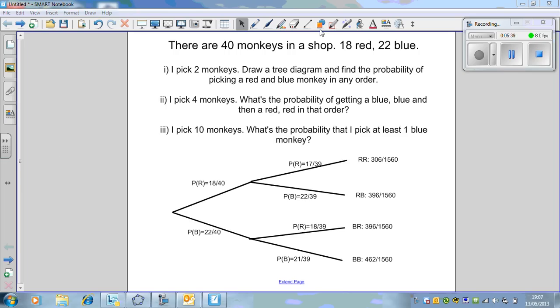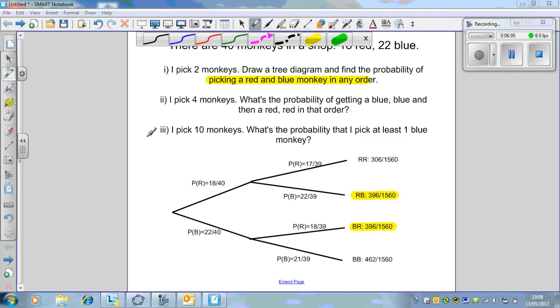Our final one is blue blue. 22 times 21 equals 462. Now we can always check to see if we're right by adding up these probabilities and making them one. 462 plus 396 plus 396 plus 306 is 1560, which is exactly what we wanted.